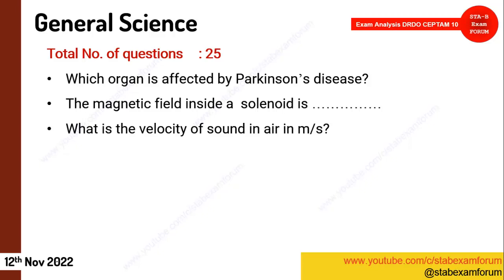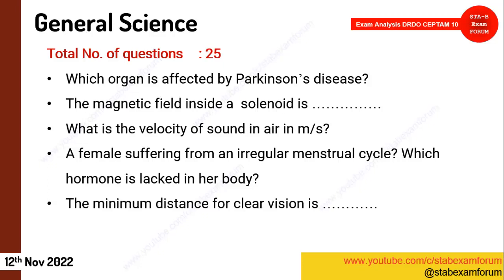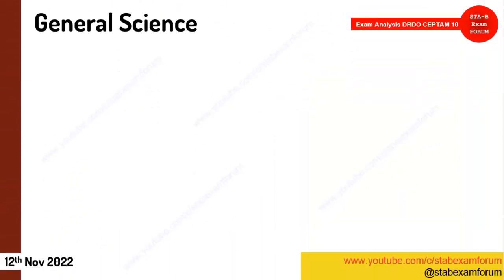A biology question asked: a female suffering from irregular menstrual cycle — which hormone is lacking? Estrogen is the main answer. The minimum distance for clear vision is 25 centimetres. A question on the relation between focal length and radius of curvature was asked — f is equal to R/2, or R = 2f.